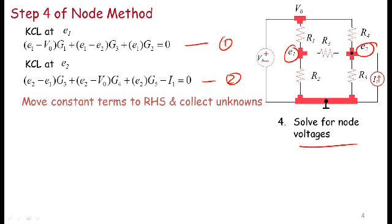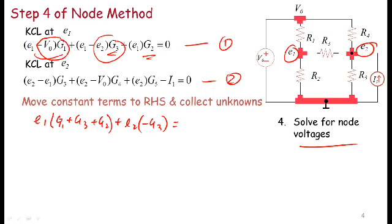So let me move all the constant terms to the right-hand side, and I will move the unknowns to the left-hand side. So let me start with E1. So notice that E1, I multiplied by G1, so I write that down, multiplied by G3, so I write that down, and multiplied by G2, so I write that down too. So I get E1 times G1 plus G3 plus G2. And then I collect the terms in E2, and there is only one here, which is minus G3. And the constant terms are here, V0, G1, and I'm going to move that to the right-hand side and write that down as V0, G1.